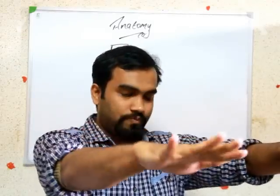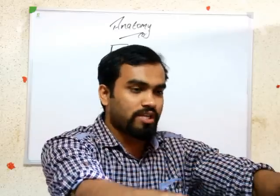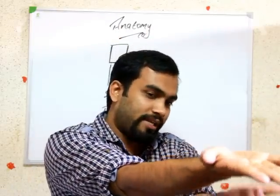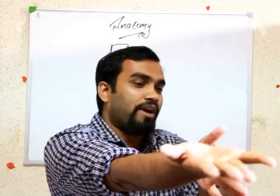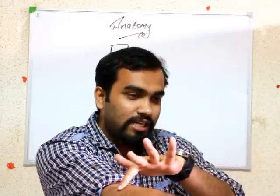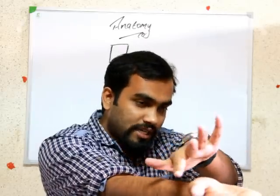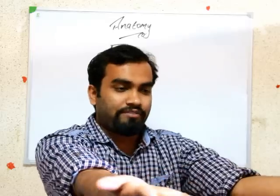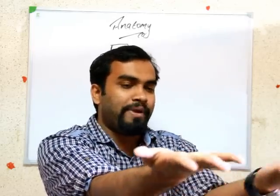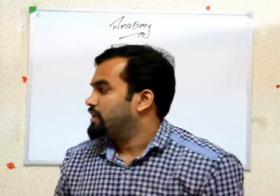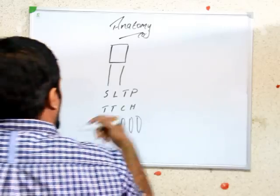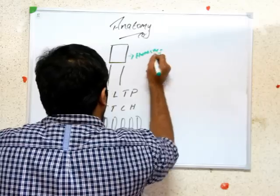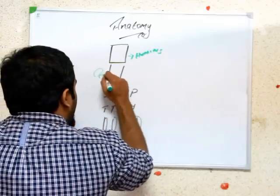Every time: in medial side we have the ulnar bone, and in lateral side we have the radial bone. If you are looking at the dorsal side, don't turn your hand — it will be the same. In medial side: ulnar bone; in lateral side: radial bone. This applies to both palmar and dorsal side.